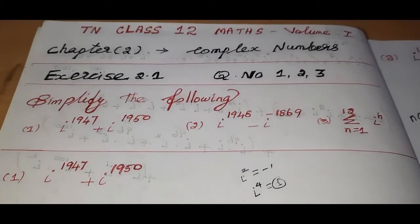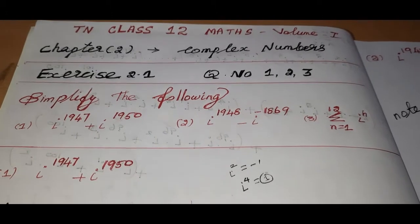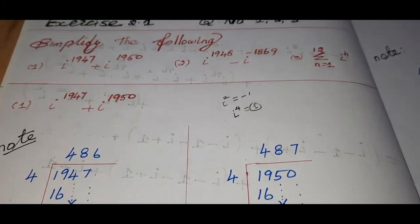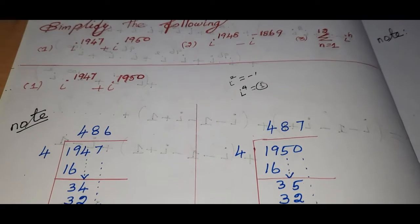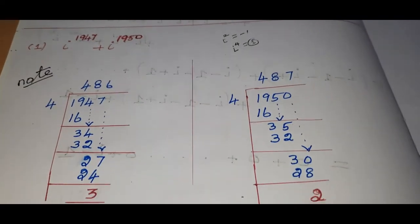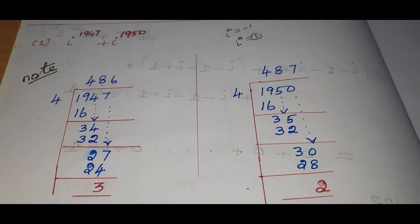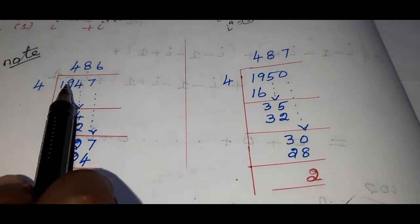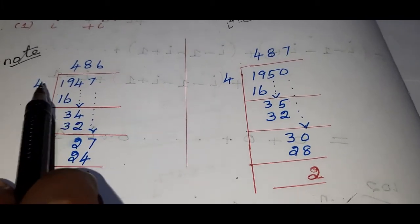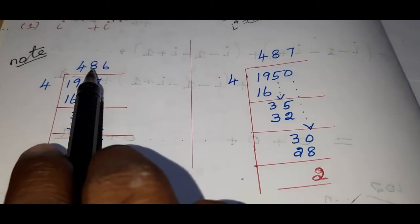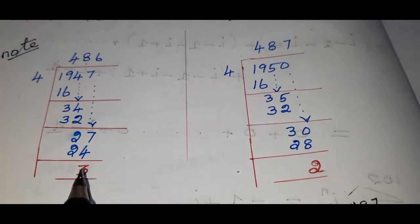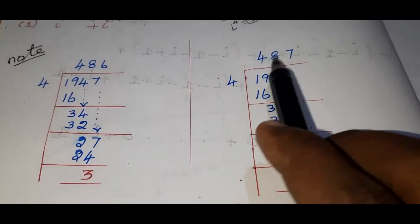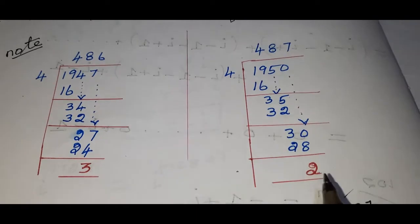This is a larger power than i power 4, so we divide by 4 to find multiples. For the first number: i power 4 whole power 486, into i power 3. For the second number: i power 4 whole power 487, into i squared.